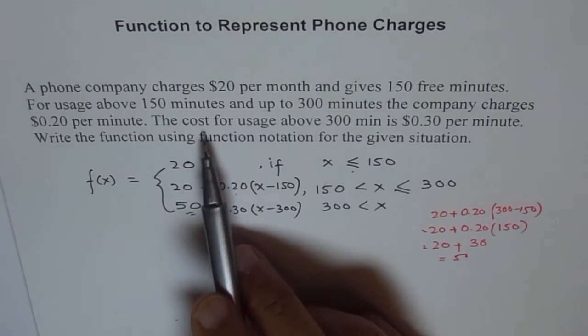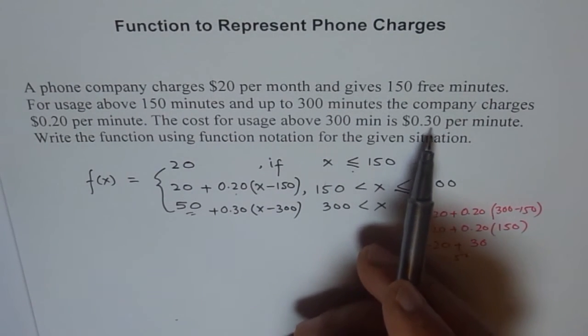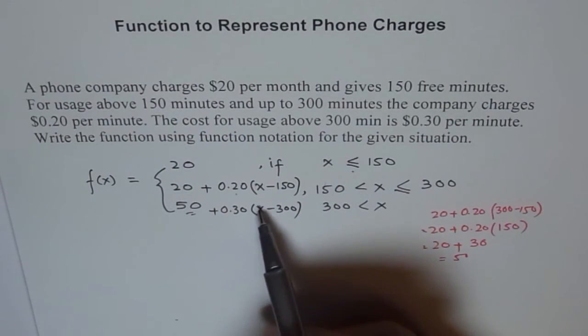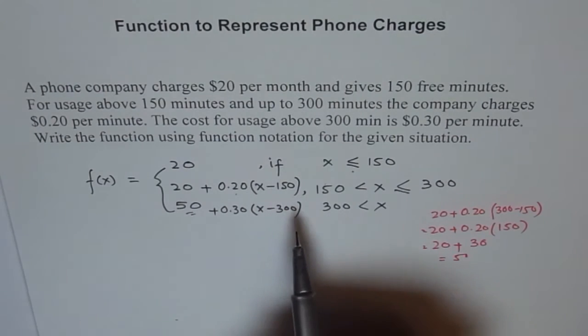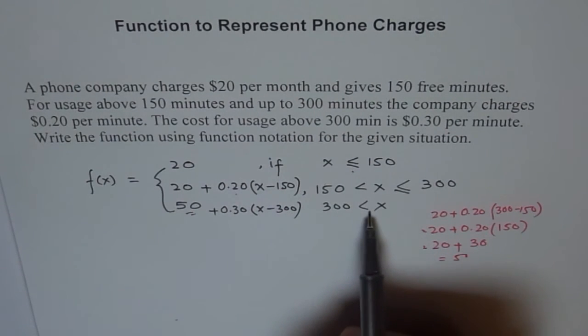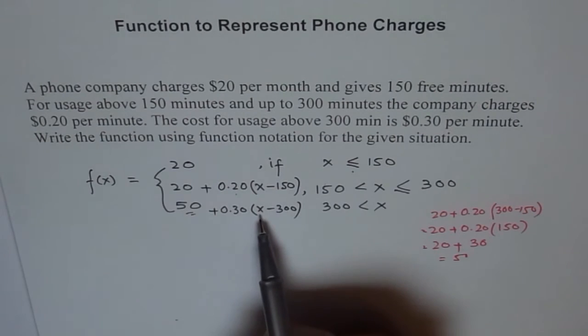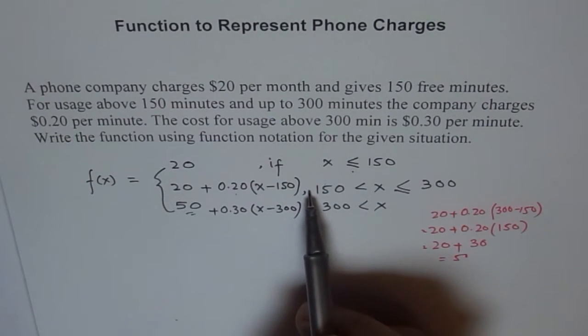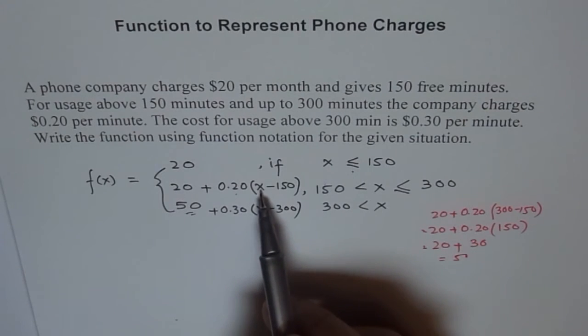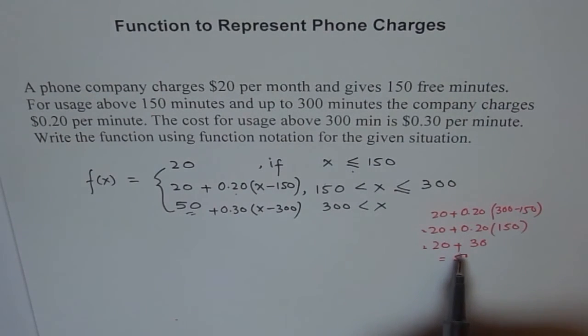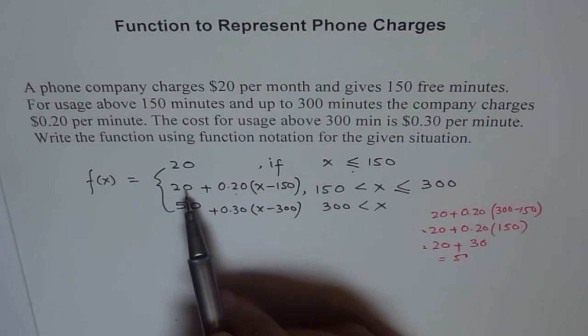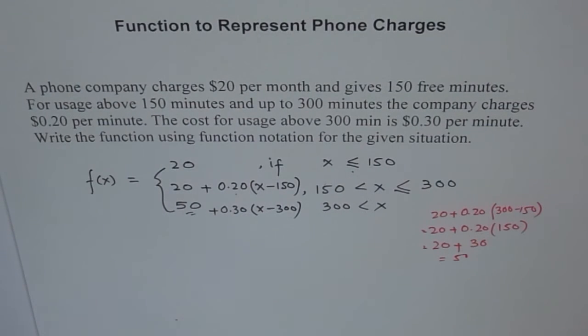Now the cost for usage above 300 minutes is 30 per minute. So in the same fashion, we developed the equation for cost of usage above 300 minutes. So above 300 minutes means x minus 300. But what about paying for the first 300 minutes? Well, we get it from here. If it is up to 300, this is the equation we described. So we just plug in 300 here, did our calculation on the side, and we found out that it should be $50. So we added 50 to it. So that is how we get our equation.